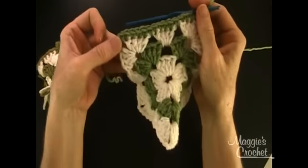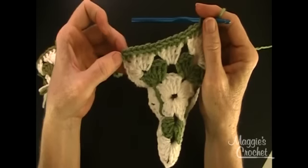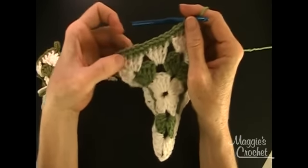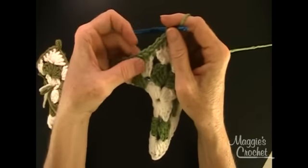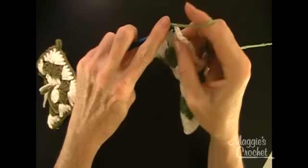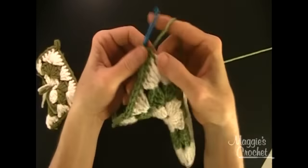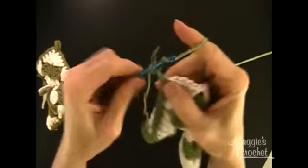So I'm going all the way across the side and I'm working a single crochet in the corner, and then all the way across in each double crochet and chain one space. And then you end with a single crochet in the next corner, which is right here, and then you chain eight.